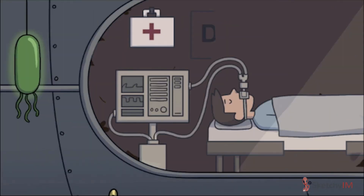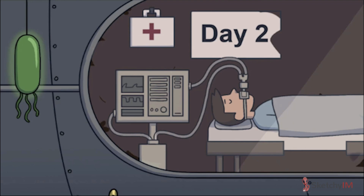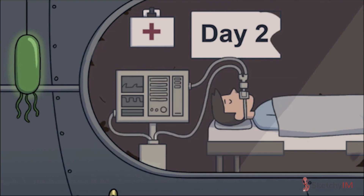Before we dive into the clinical presentation and workup, let's introduce nosocomial pneumonia — pneumonia acquired in a healthcare setting. When patients are admitted to the hospital, they get exposed to a whole new world of pneumonia-causing bugs, so the epidemiology is slightly different than in the community. Nosocomial pneumonia is divided into hospital-acquired pneumonia (HAP) and ventilator-associated pneumonia (VAP). For pneumonia to qualify as HAP, it must have an onset more than 48 hours after hospital admission — meaning no signs of incubating infection at the time of admission. Similarly, to qualify as VAP, patients need to develop the pneumonia more than 48 hours after endotracheal intubation.